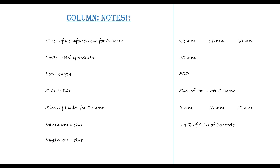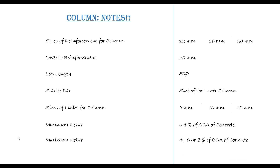We also have the maximum reinforcement — this determines the maximum amount of reinforcement a column concrete section can take. If you are using the Eurocode, it specifies 4%. According to British Standard, you can have either 6% or 8% depending on the mode of construction.